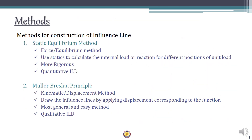Now let's see the methods we have for drawing influence line diagrams for indeterminate beams. We have basically two methods: the static equilibrium method and the well-known Müller-Breslau principle, which are also used in determinate analysis. The static equilibrium method gives an actual, real, quantitative ILD — by quantitative I mean you get the exact value at each of the points. However, this method is more rigorous and tedious.